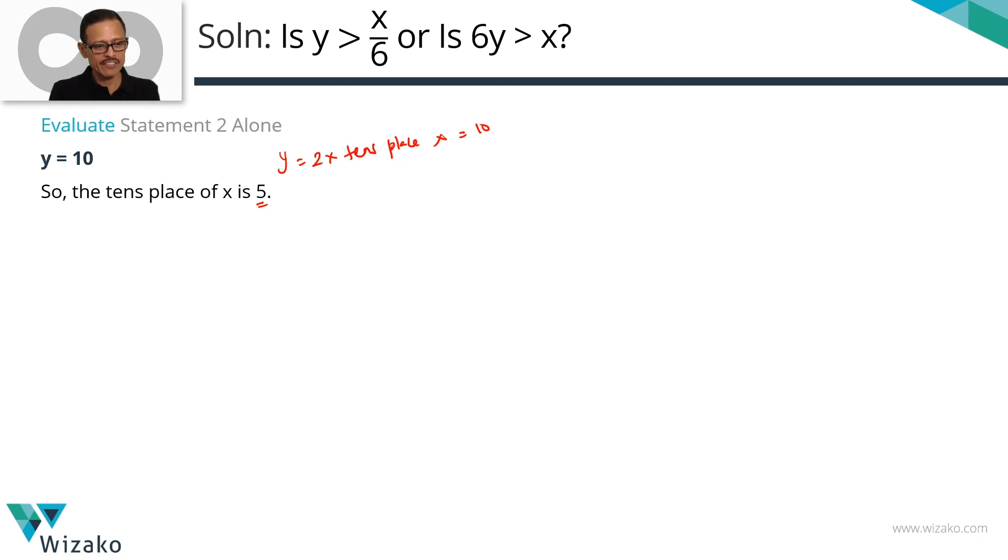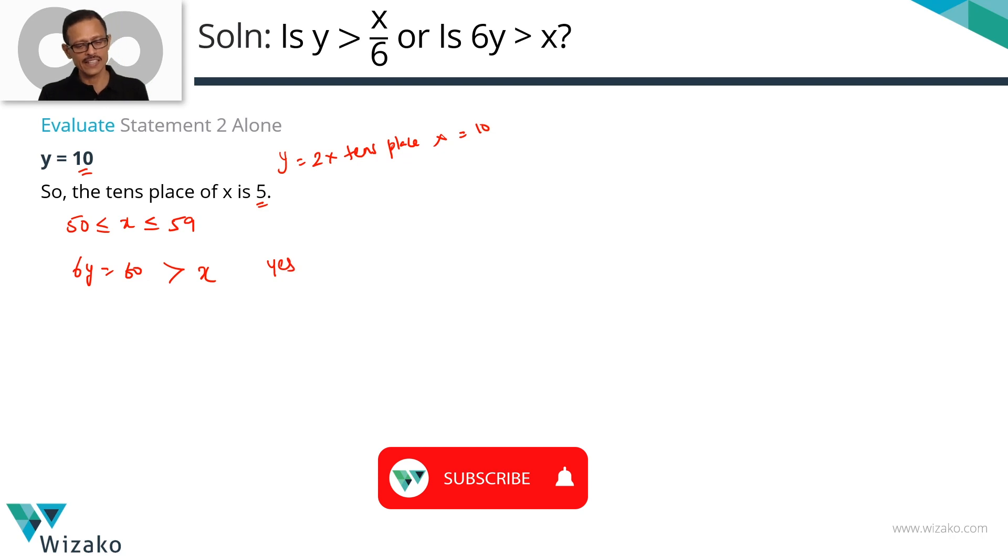The tens place of X is 5. What all values can X take? X can take values in the closed interval. It can start with 50 and it can go all the way up to 59, inclusive. It can be 50, 51, all the way up to 59. Now let's check out what is 6Y. Y is 10 given in statement 2. So 6Y is equal to 60. 6Y is 60. X can take values from 50 to 59 both inclusive. If you take any of these values from 50 to 59 inclusive, we'll realize that 6Y which is 60 is greater than X. So without exception, in all of these instances, 6Y is greater than X, the answer to the question is a definite yes.